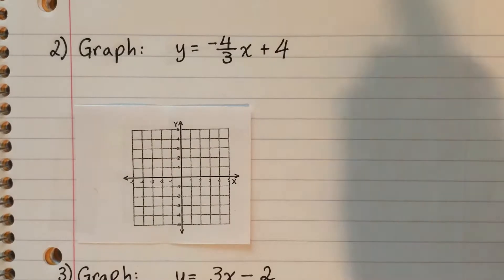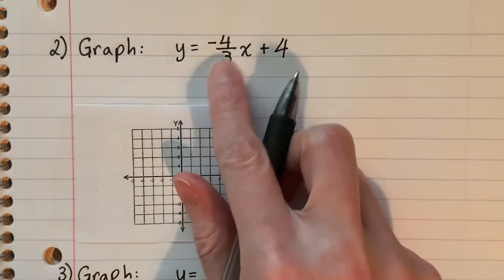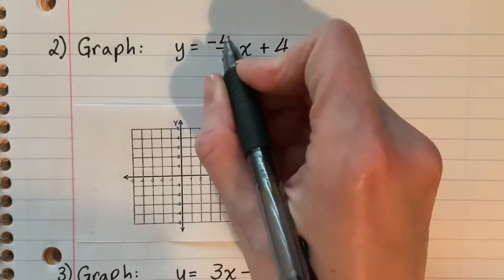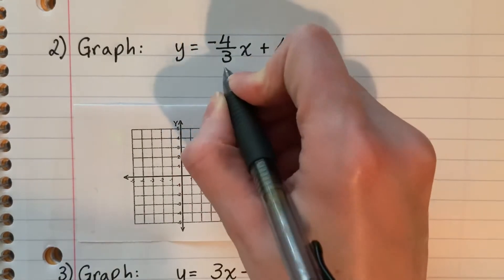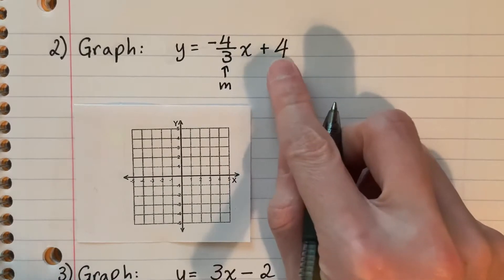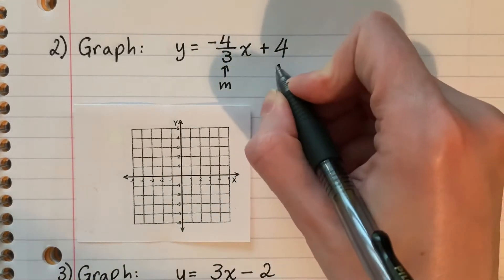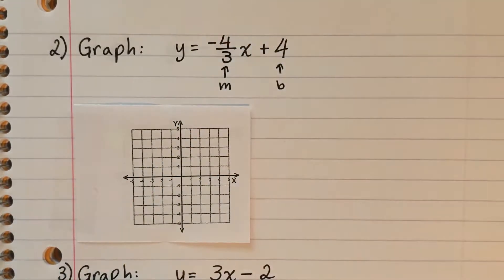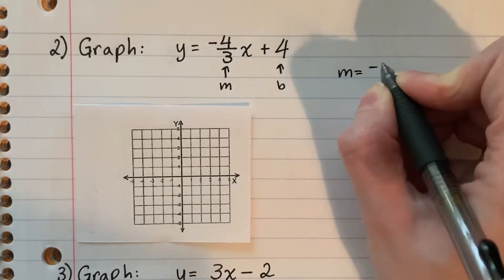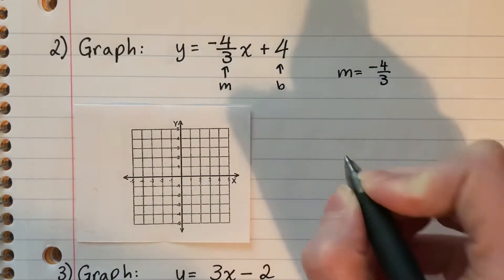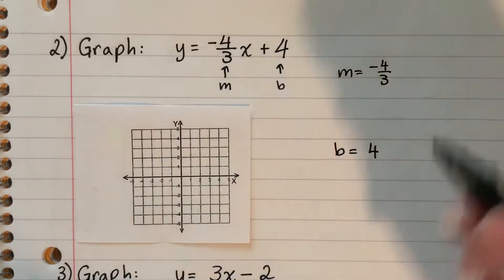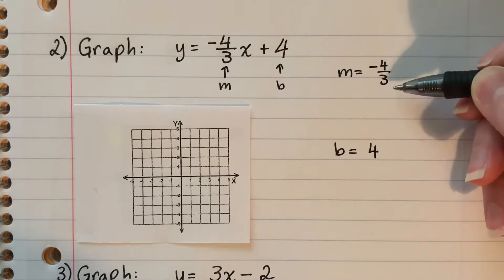Example two: graph y equals negative four-thirds x plus four. The number with x is my m, my slope, and the number at the end is my b, my y-intercept. So m is negative four-thirds and b is positive four. The four is my rise and the three is my run.